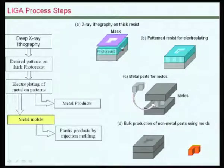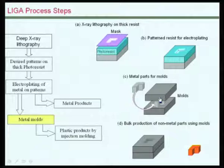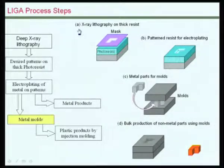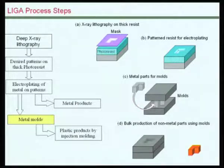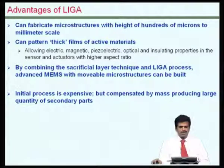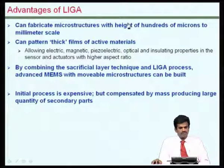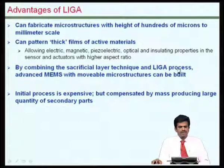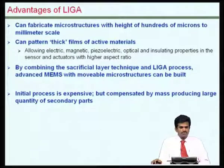Because X-ray lithography is used, we can have parts with high vertical dimensions. By changing this one step from optical lithography to X-ray lithography, even though it is expensive, one can build geometries which are relatively thick — even up to hundreds of microns thick microstructures which could be patterned. This can even be combined with surface micromachining and other conventional MEMS-based approaches for building truly useful microsystems. The X-ray lithography process, which is the first step, is fairly expensive, but this is compensated by the mass production of the large quantities of secondary parts formed.